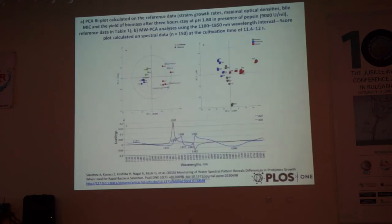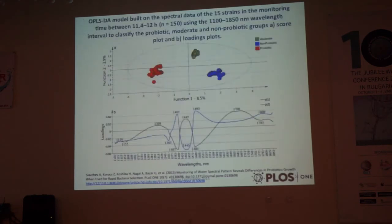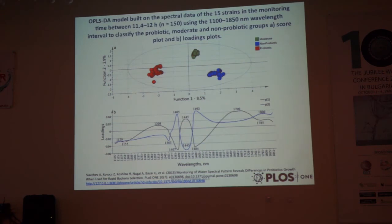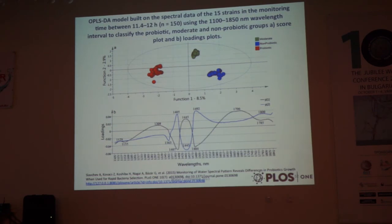Another paper was on bacteria functionality. For probiotics and non-probiotic bacteria - non-probiotic is blue, moderate is green, and probiotic is red. We want to analyze whether a strain is probiotic - to see its survival, etc. - which normally takes months or even a year. Now with this water profile, we can analyze it. We need only ten hours to say if this particular strain is probiotic, non-probiotic, or moderate.